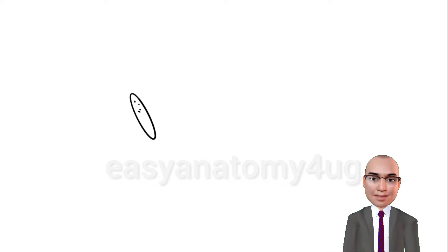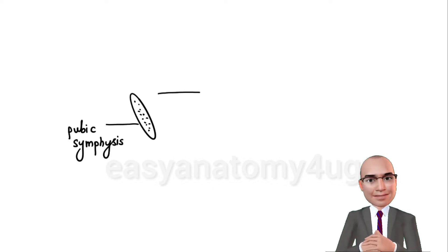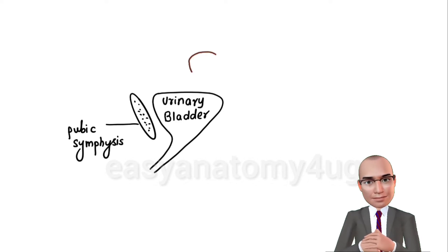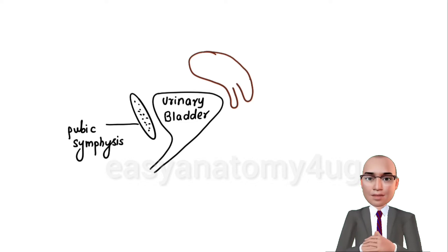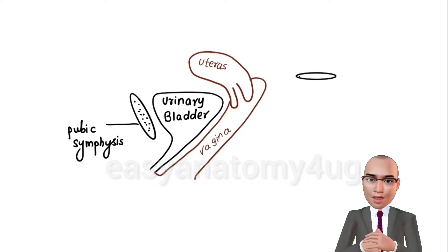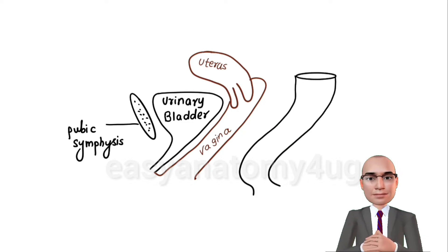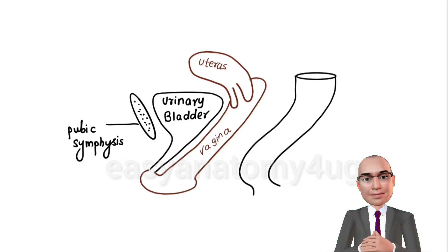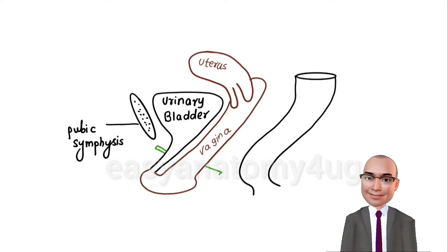Start with the pubic symphysis. Behind the pubic symphysis, show the urinary bladder. In relation to the superior surface and base of the urinary bladder, show the uterus and vagina. Now show the rectum and anal canal in the posterior relation of the uterus and vagina respectively. Next, draw the perineal membrane, which is pierced by the urethra and vagina.